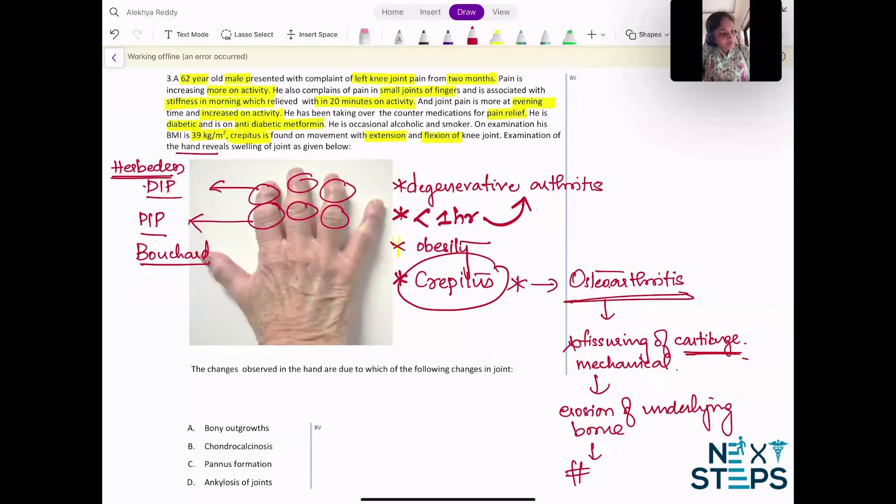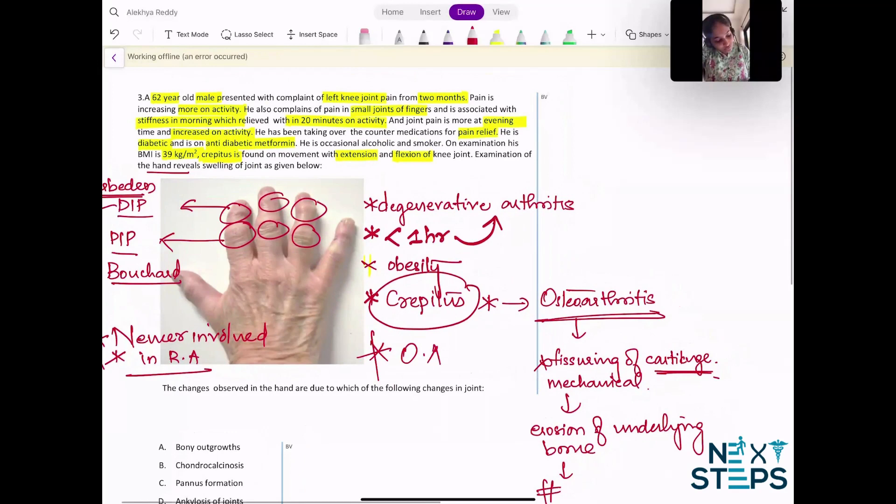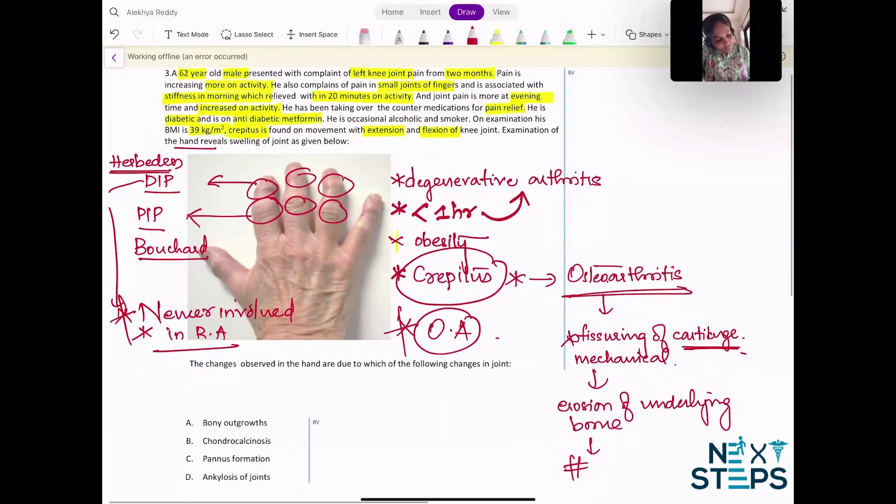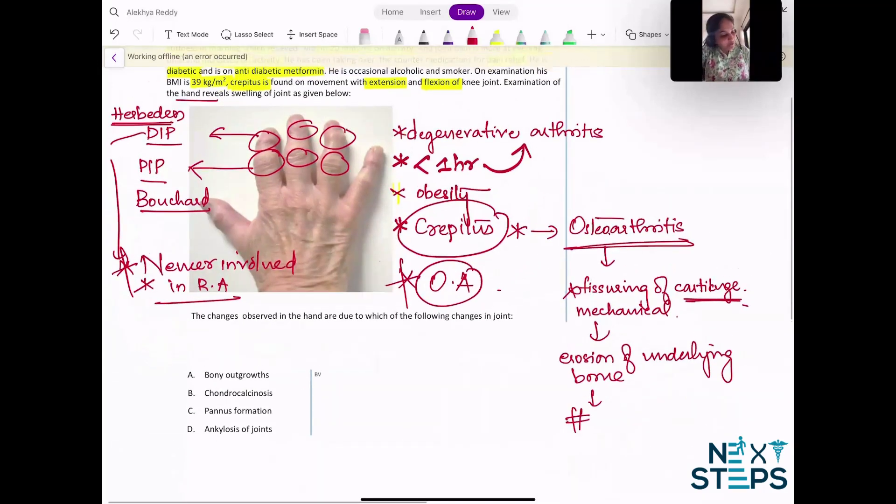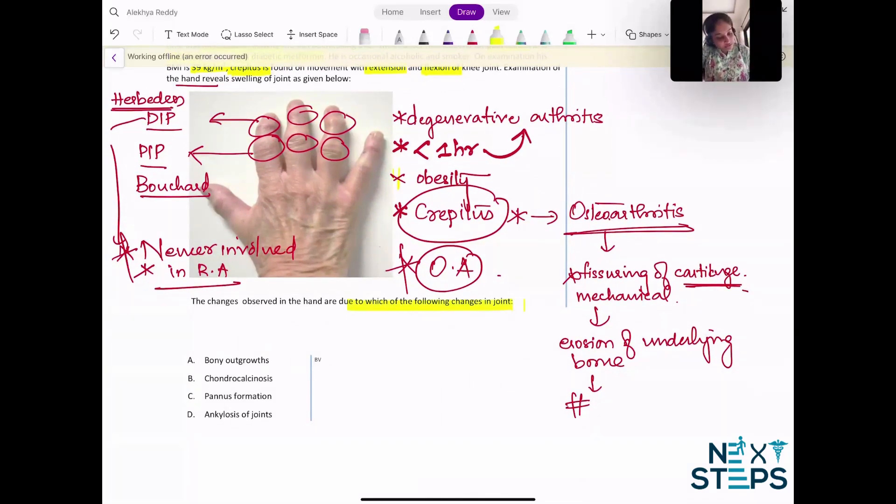Remember one thing: distal interphalangeal joints never involved in rheumatoid arthritis, so that helps us in differentiating here. Clearly we are dealing with a case of osteoarthritis. It is characterized by formation of osteophytes.